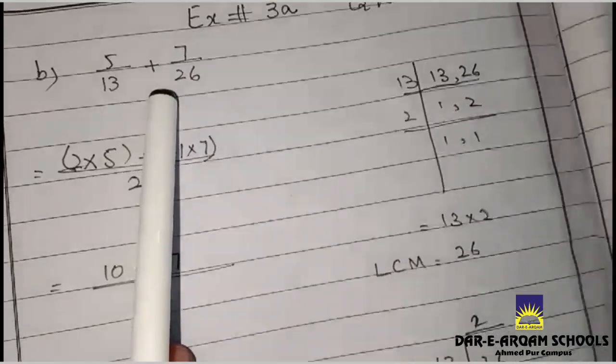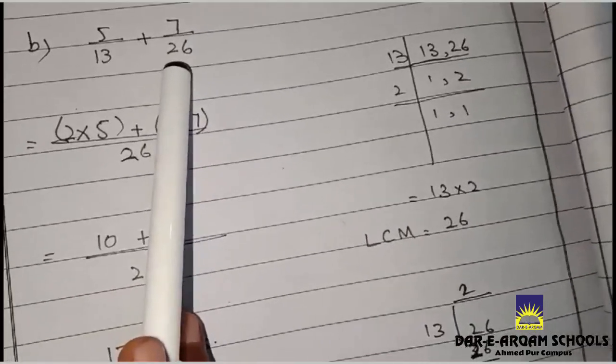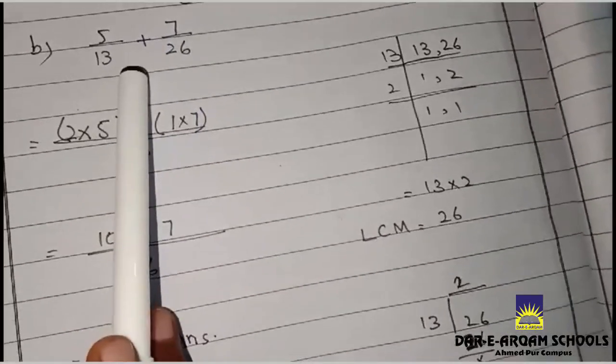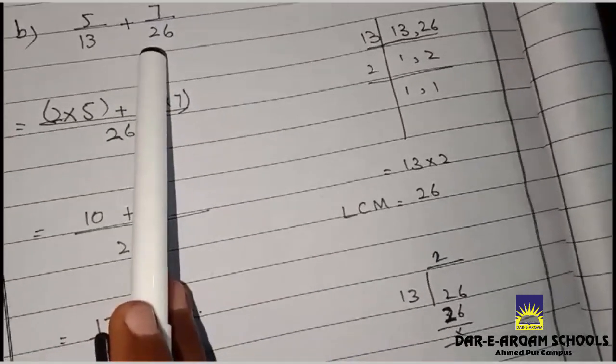5 by 13 plus 7 by 26. When we add fractions, we need to find the LCM of the denominators.